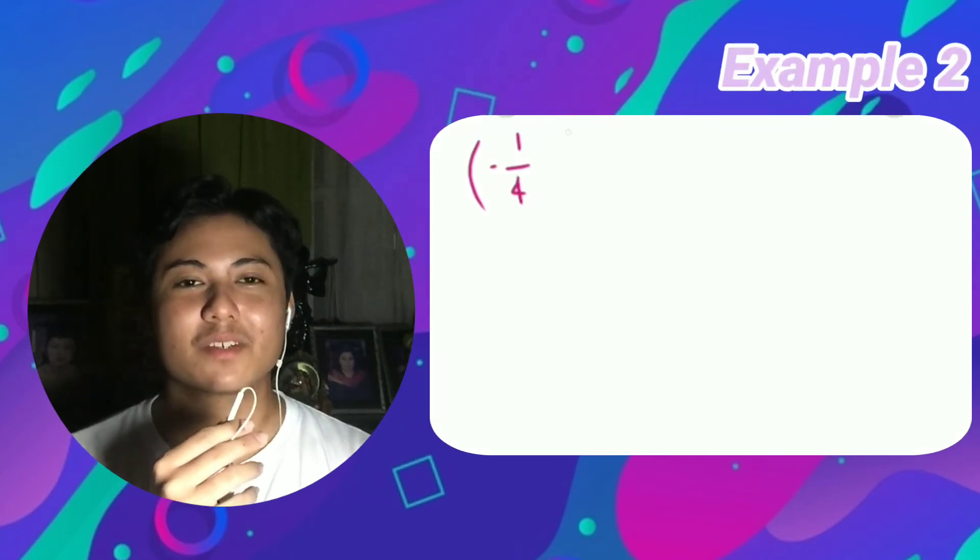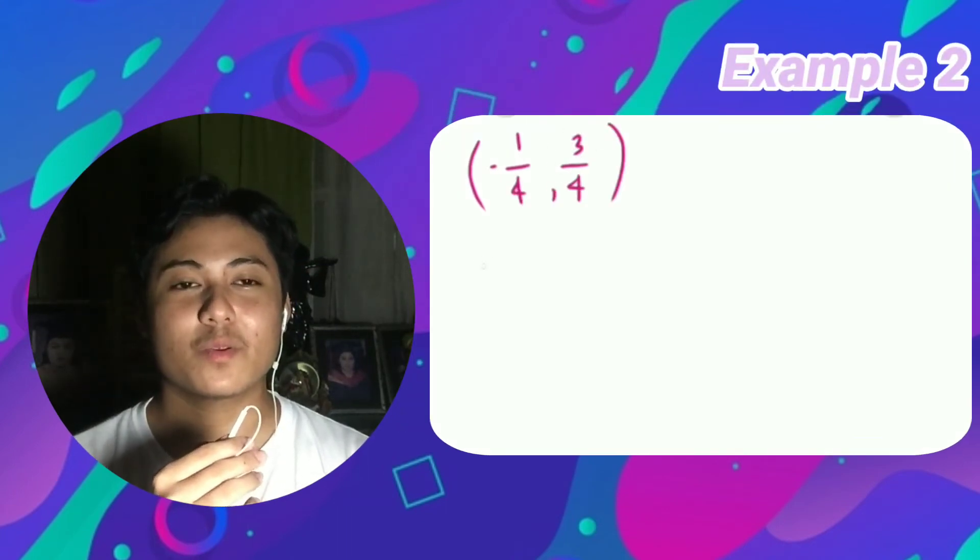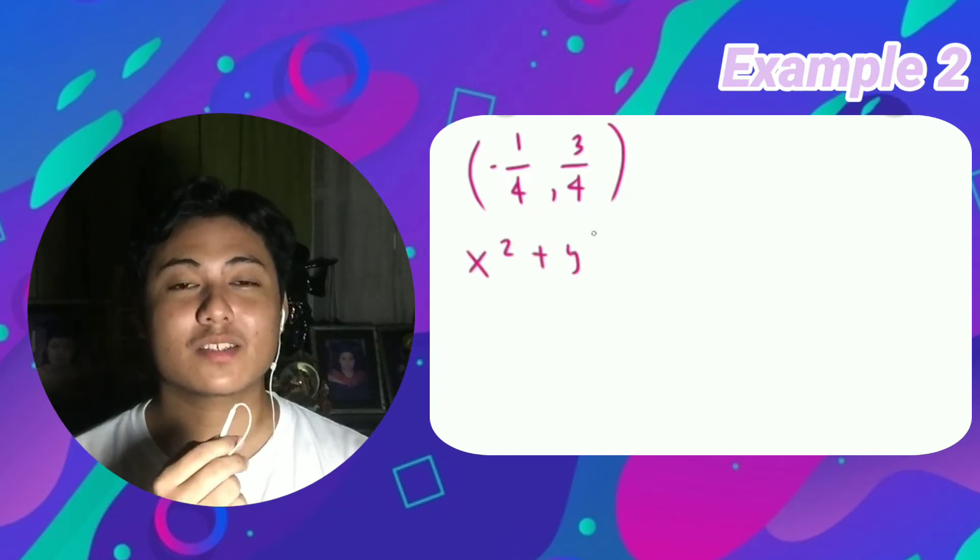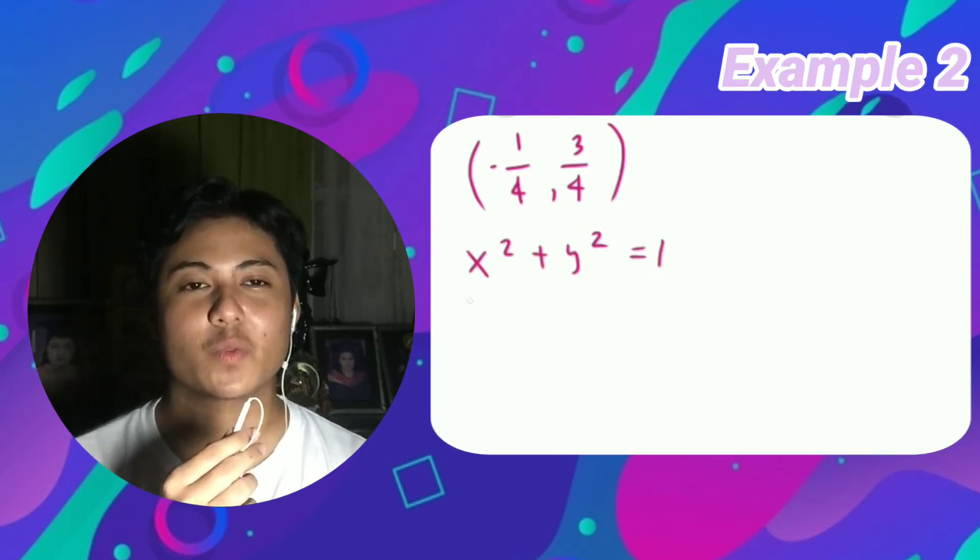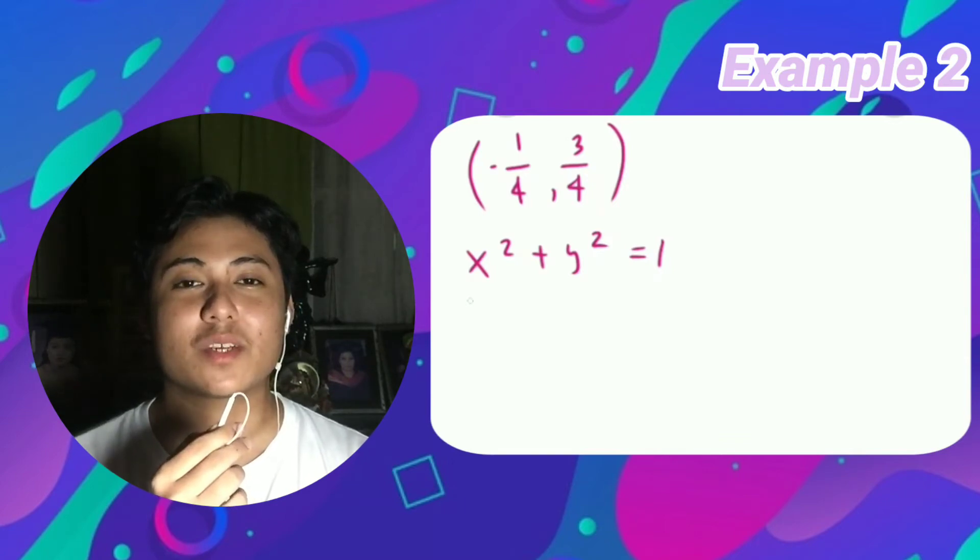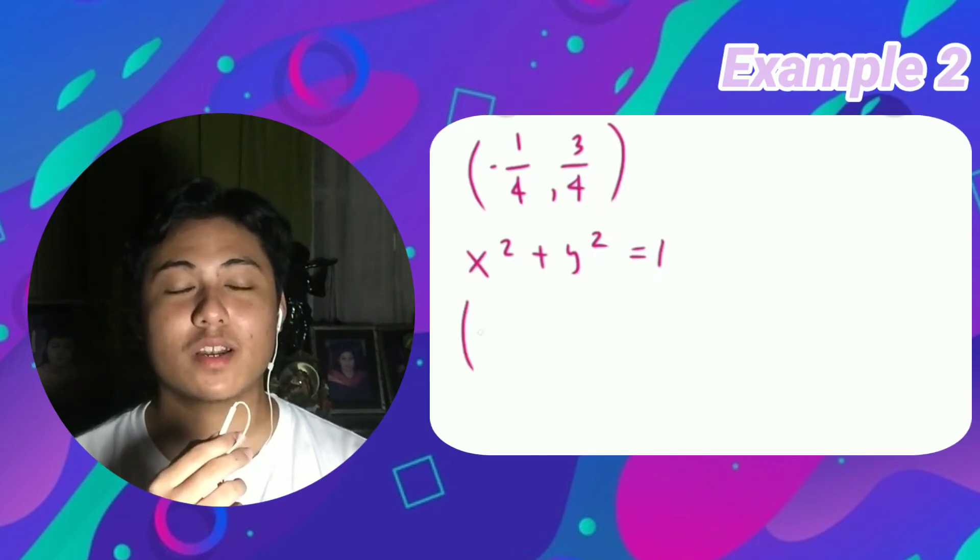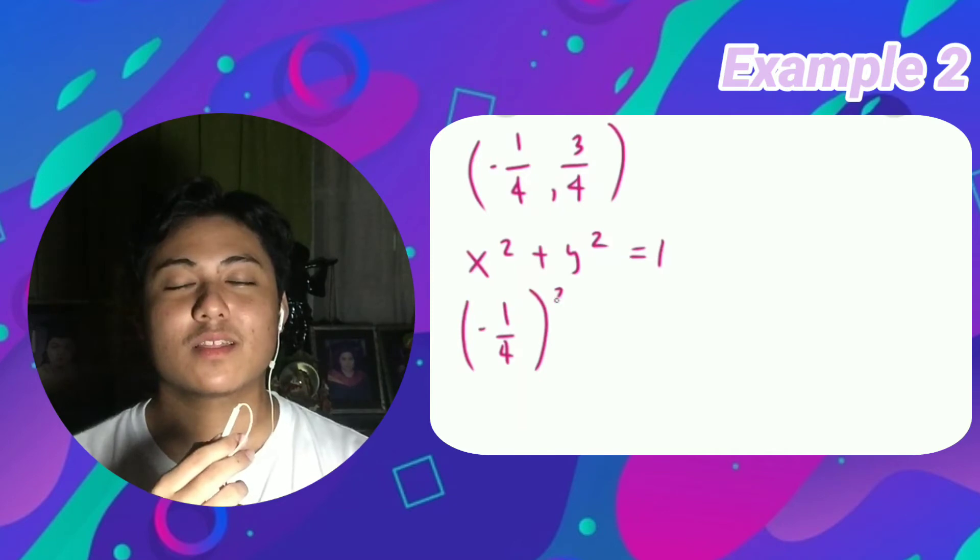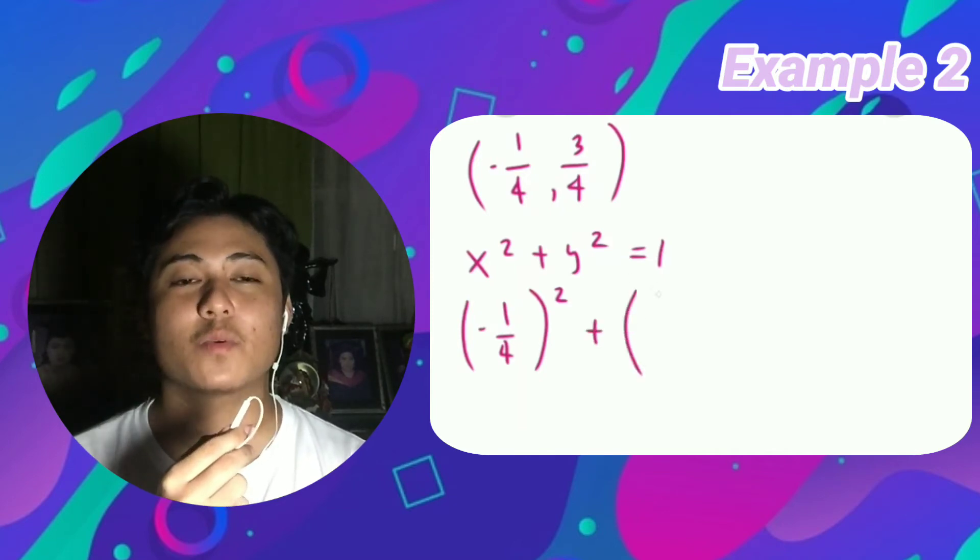The next given example is (-1/4, 3/4). So the first thing that we're going to do is substitute the x and y values into the formula x² + y² = 1. Right after we substitute -1/4 for x and 3/4 for y, the next thing is to evaluate (-1/4)² + (3/4)².